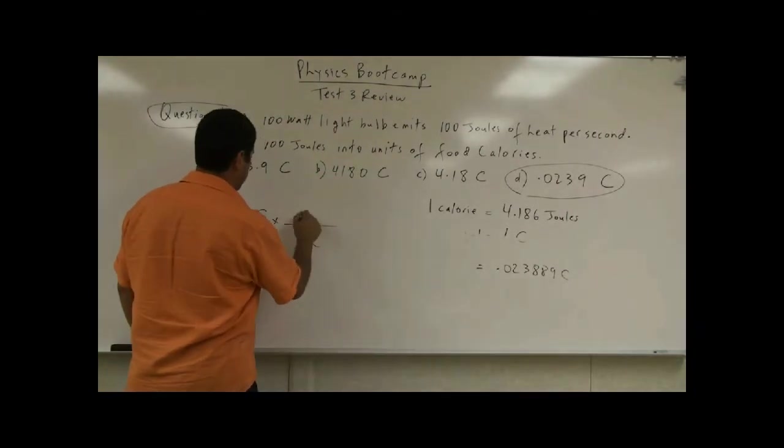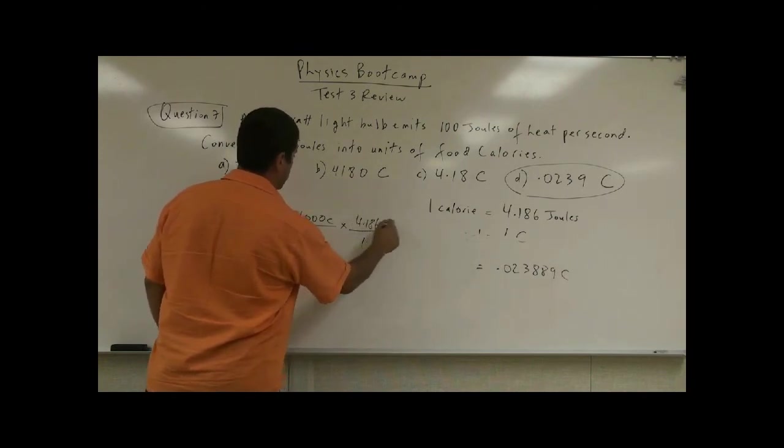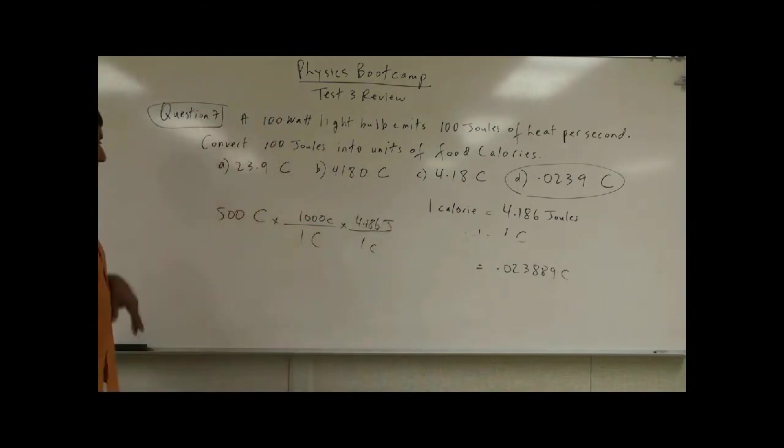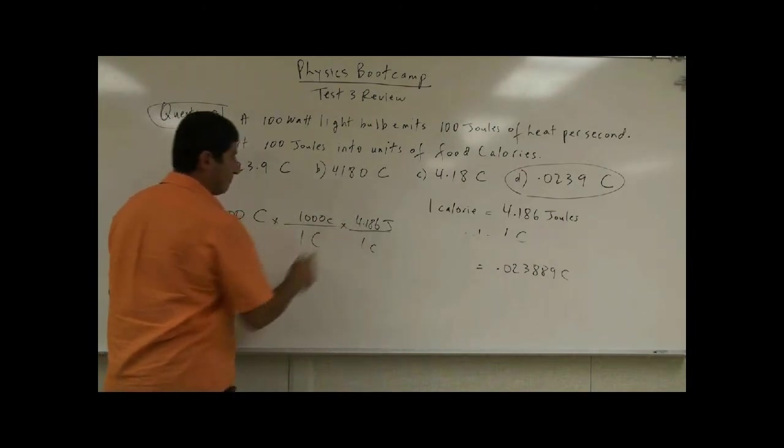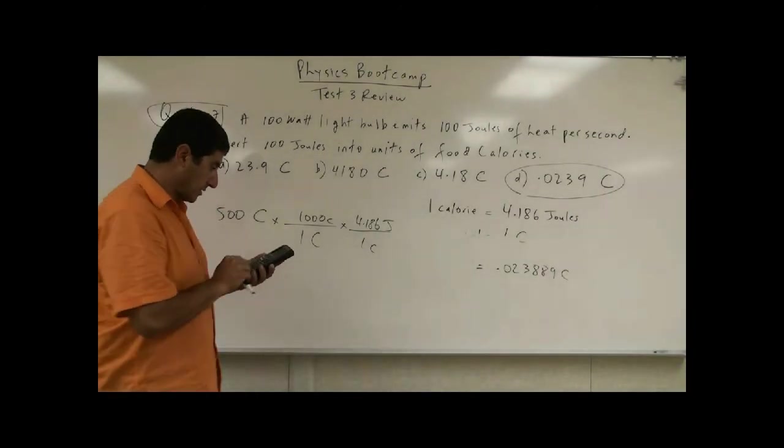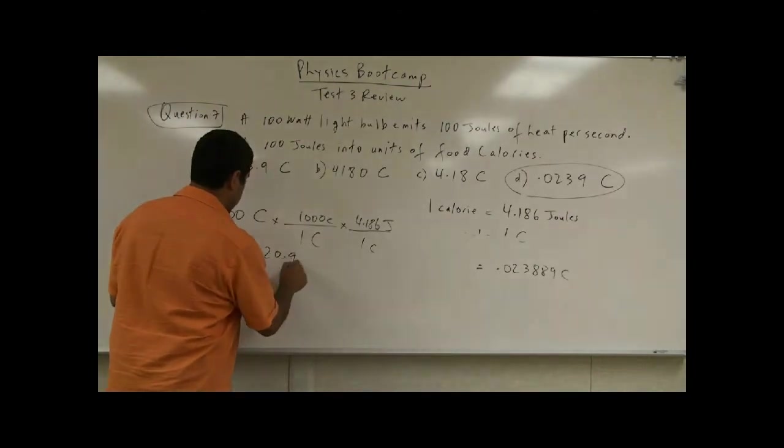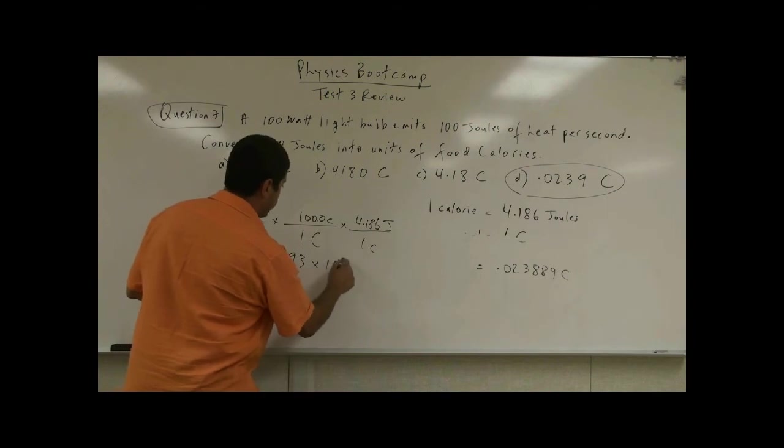One food calorie is a thousand small calories. One small calorie, 4.186 joule. So that's going to be a lot. So if we just multiply 5 by 4.186, we get 20.93 times 10 to the fifth joules.